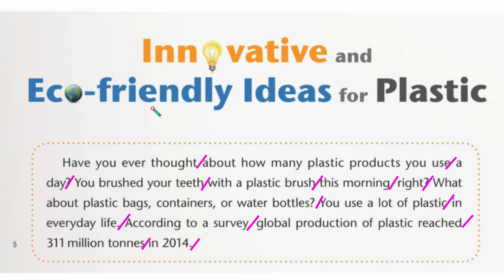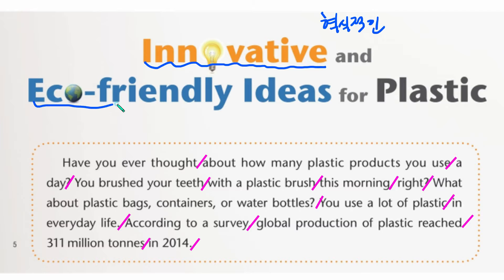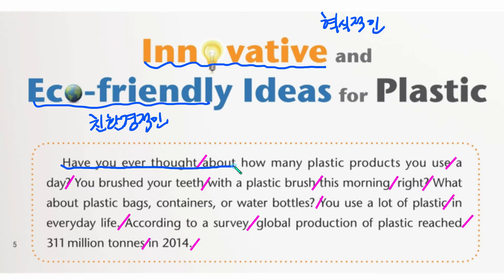추가 설명하겠습니다. 타이틀에 나와 있는 단어 'Innovative'는 혁신적인이라는 뜻이고, 'Eco-friendly'는 친환경적인이라는 뜻입니다. 본문의 'Have you ever thought about?'는 뭐뭐에 대해서 생각해 본 적이 있나요?라는 표현으로, 회화에서도 많이 사용할 수 있는 덩어리 표현이니 기억해 놓읍시다.